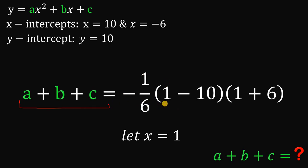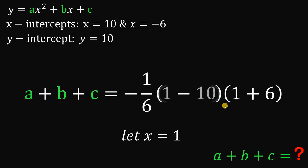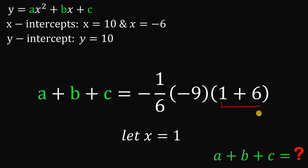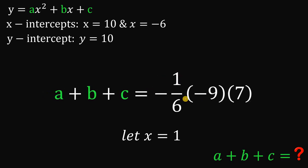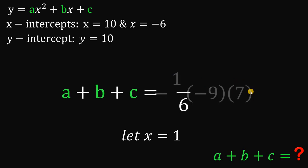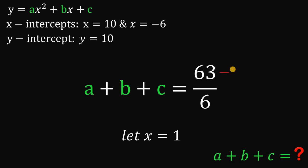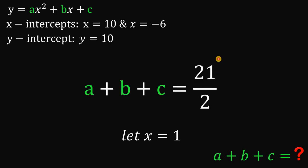On the right-hand side with x equals 1, we have negative 1 over 6 times 1 minus 10 times 1 plus 6. Simplifying: 1 minus 10 is negative 9, and 1 plus 6 is 7. So we have negative 1 over 6 times negative 9 times 7, which gives positive 63 over 6. Dividing both numerator and denominator by 3 gives 21 over 2. Therefore, a plus b plus c equals 21 over 2.